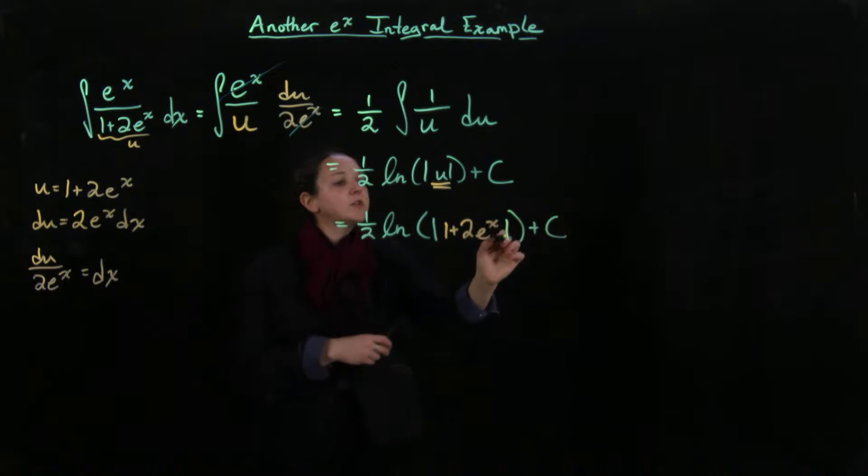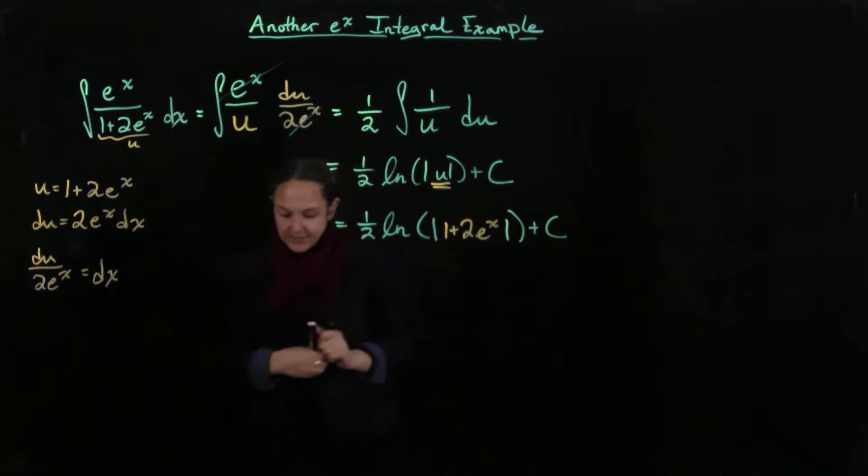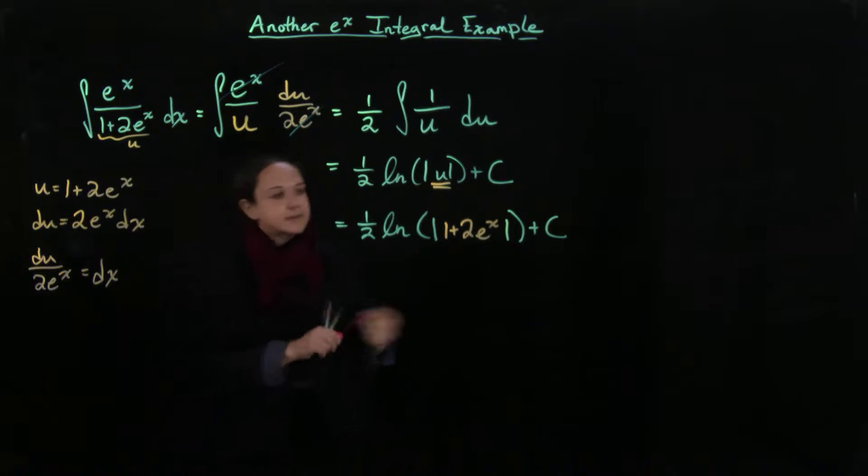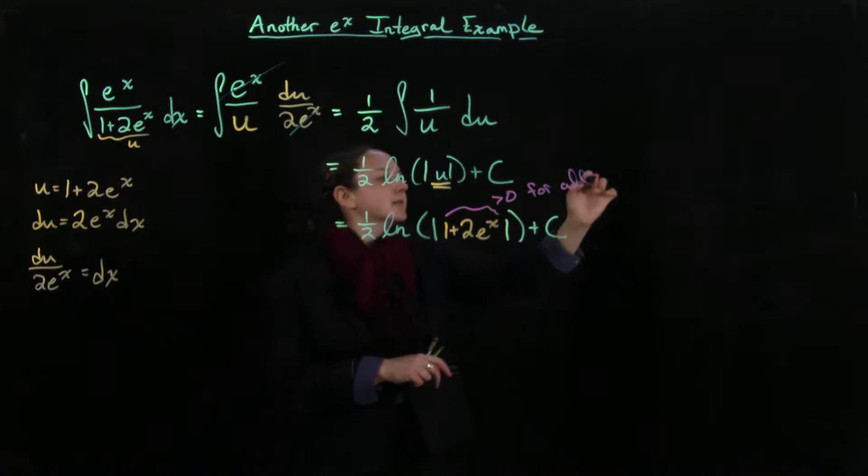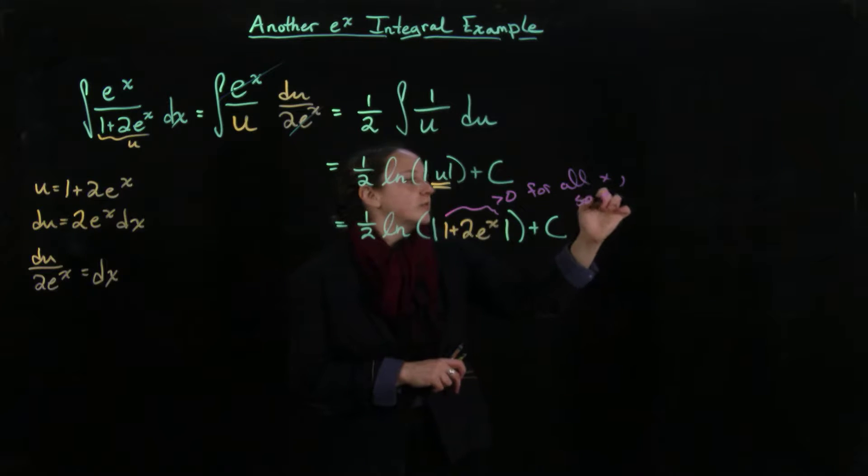But we notice we don't actually need these absolute values because this is actually greater than 0. So this is greater than 0 for all x. So don't need the absolute values.